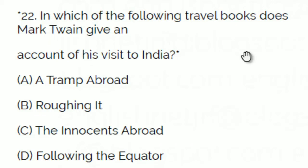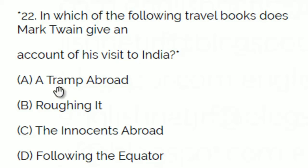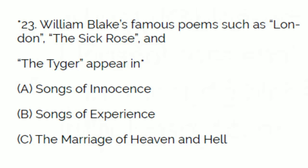Write down your score in the comment box. In which of the following travel books does Mark Twain give an account of his visit to India? A: Tramp Abroad, B: Roughing It, C: The Innocents Abroad, D: Following the Equator. Your answer is D — Following the Equator.